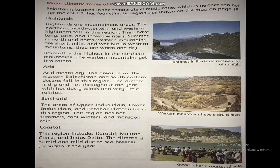Highlands: The higher the location of a place above the surface of the earth, the colder its climate is. Summers in the north and northwestern mountains are short, mild, and wet, but in western mountains they are warm and dry. Rainfall is highest in the northern mountains, while the western mountains get less rainfall.